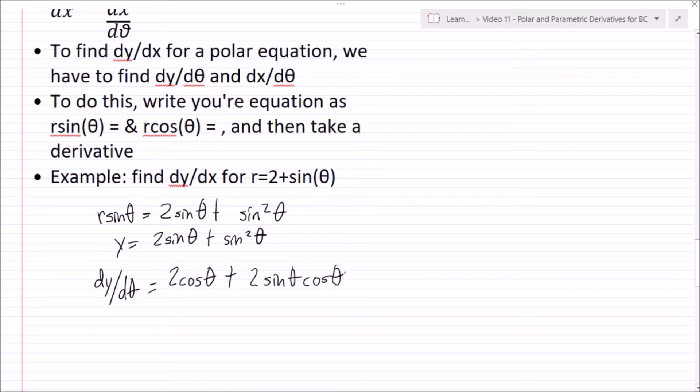Okay, so now we'll do the same thing for my x. So I'll multiply both sides by cos(θ). r cos(θ) equals 2 cos(θ) plus sin(θ) cos(θ). Alright, and now x equals 2 cos(θ) plus sin(θ) cos(θ).